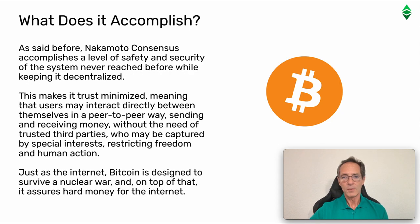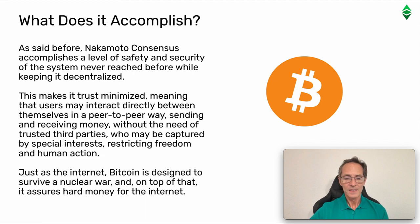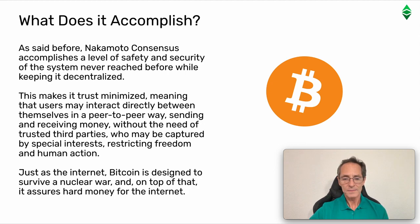What does it accomplish? Nakamoto consensus accomplishes a level of safety and security of the system never reached before, while keeping it decentralized. This makes it trust-minimized, meaning that users may interact directly between themselves in a peer-to-peer way, sending and receiving money without the need of trusted third parties, who may be captured by special interests, restricting freedom and human action. Just as the Internet, Bitcoin is designed to survive a nuclear war. And on top of that, it assures hard money for the Internet.